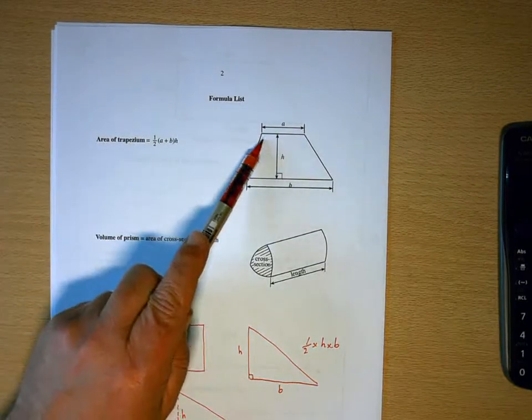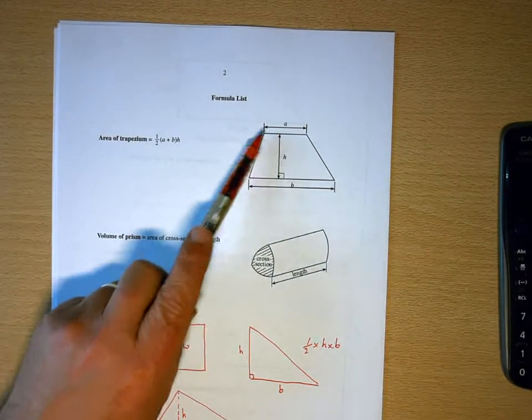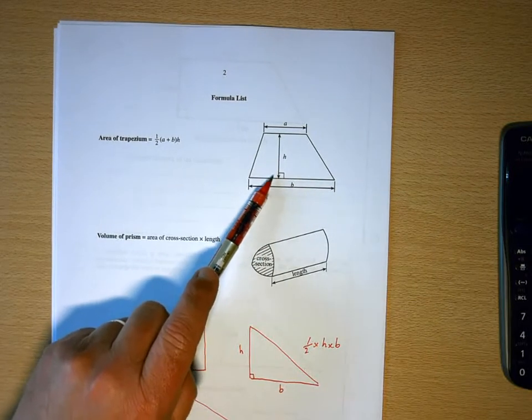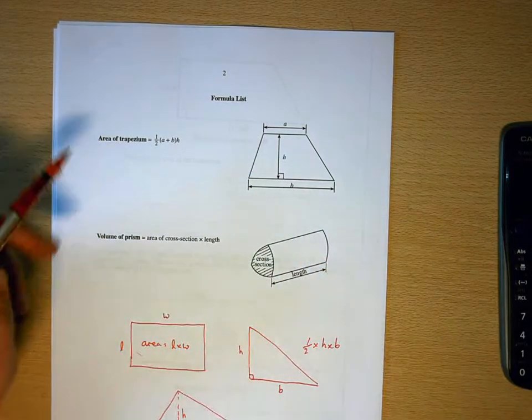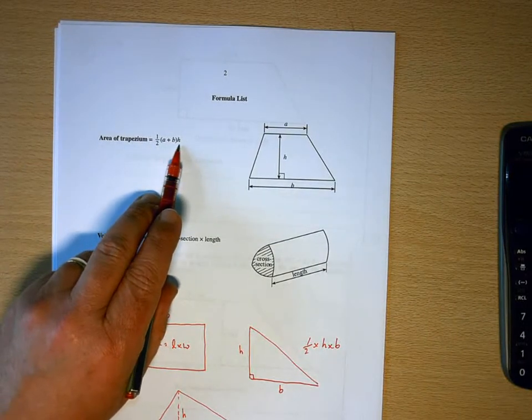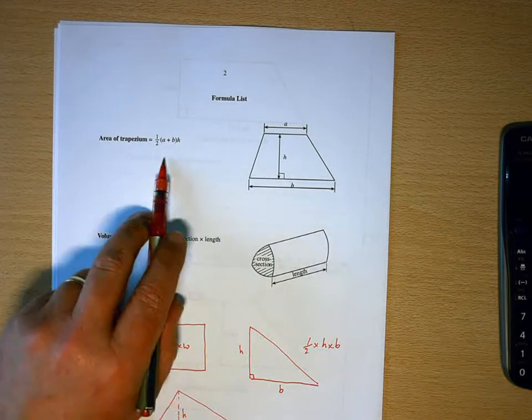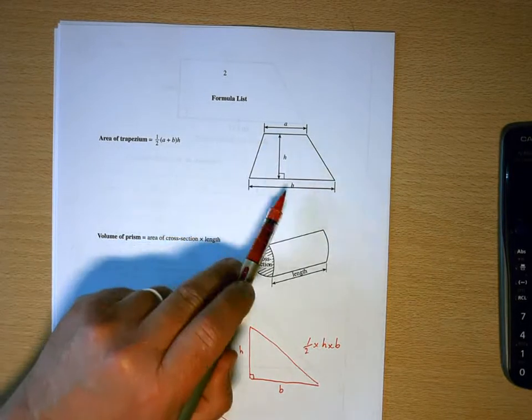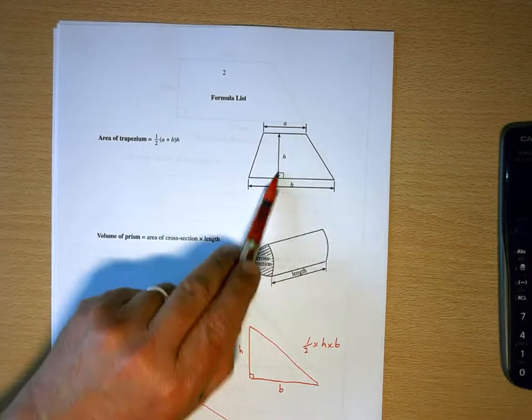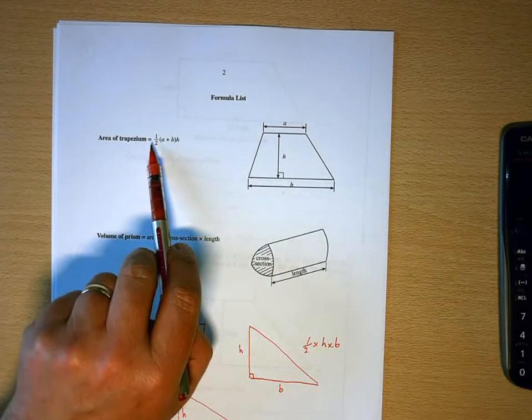What we have are a pair of parallel sides, which in the formula are A and B, and H, which is the perpendicular distance, the right angle distance between them. Then the formula is given half bracket A plus B, close bracket H. What that means is you're going to add your two parallel sides together, multiply that by the distance between them, and then half your answer.